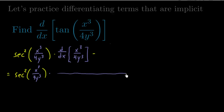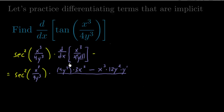We have secant squared of x cubed over 4y cubed, then we multiply by the quotient rule. That's the bottom function, 4y cubed, times the derivative of the top, which is 3x squared, minus x cubed times the derivative of the bottom, which is 12y squared — bringing the 3 down with the 4 — and we immediately multiply by y prime. Then divide by the bottom squared, so 4y cubed squared. In this big expression, there's our y prime, which tells us the slope.